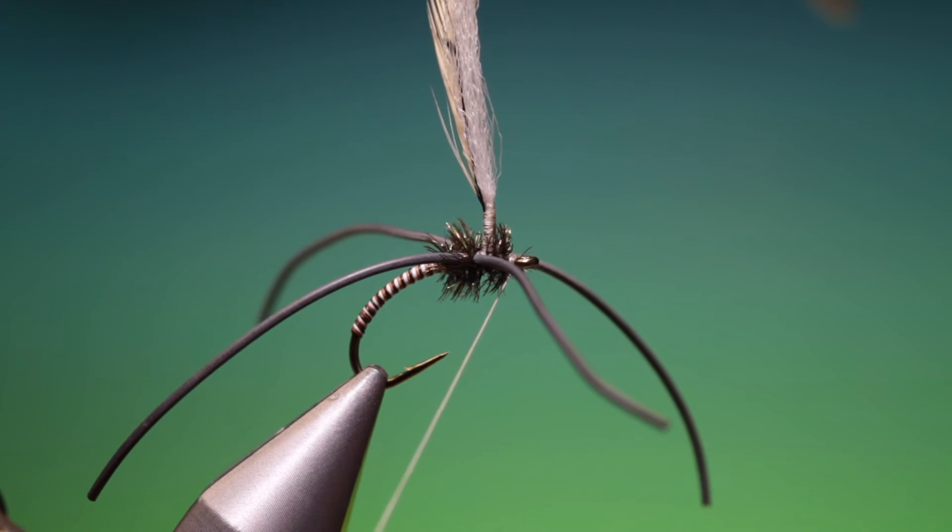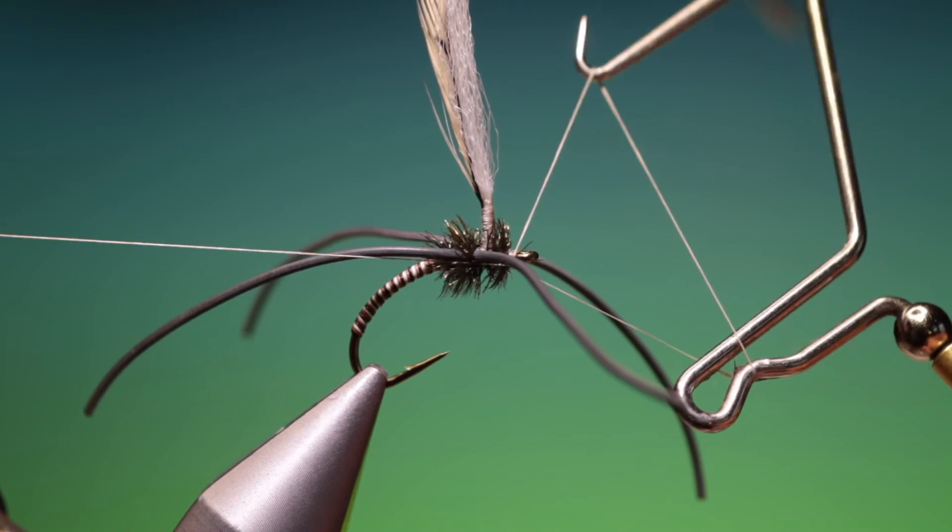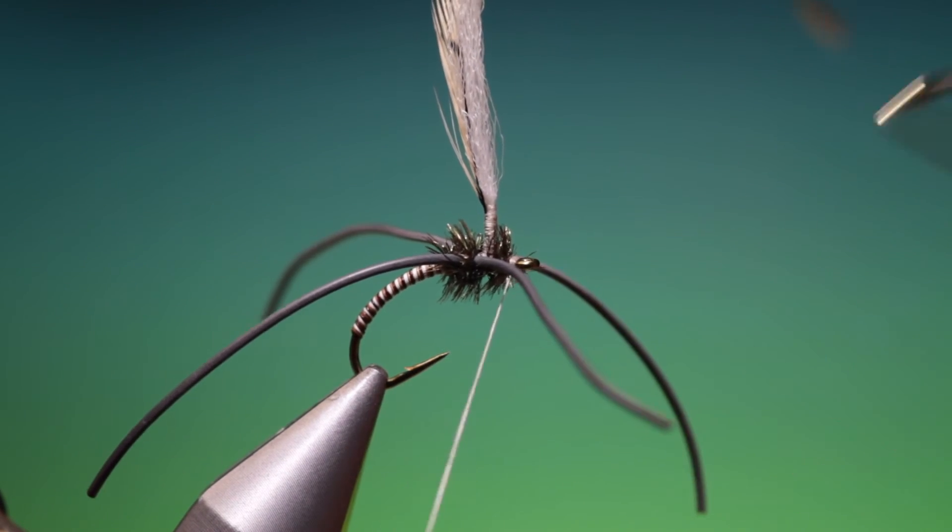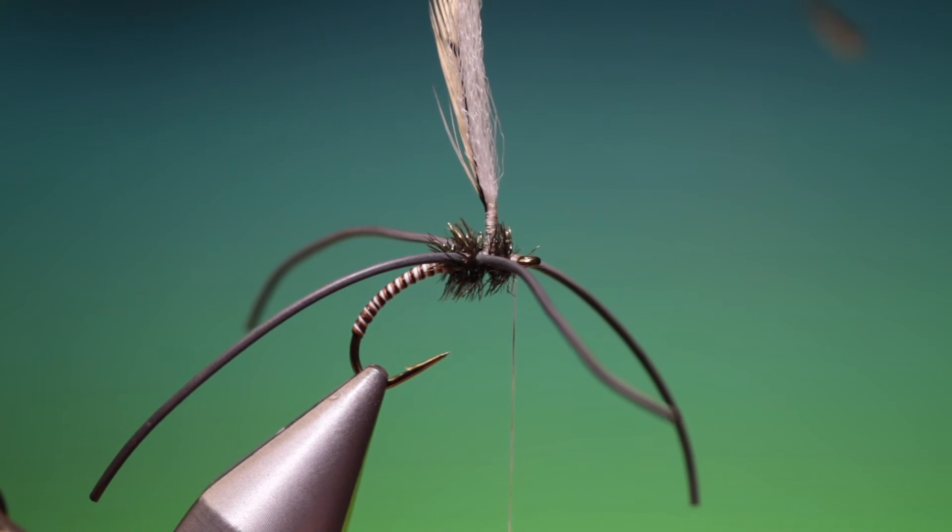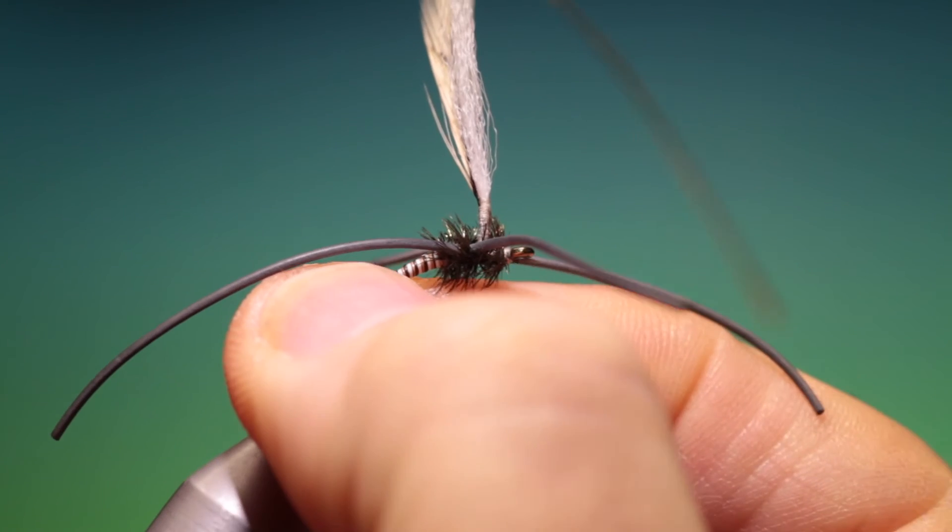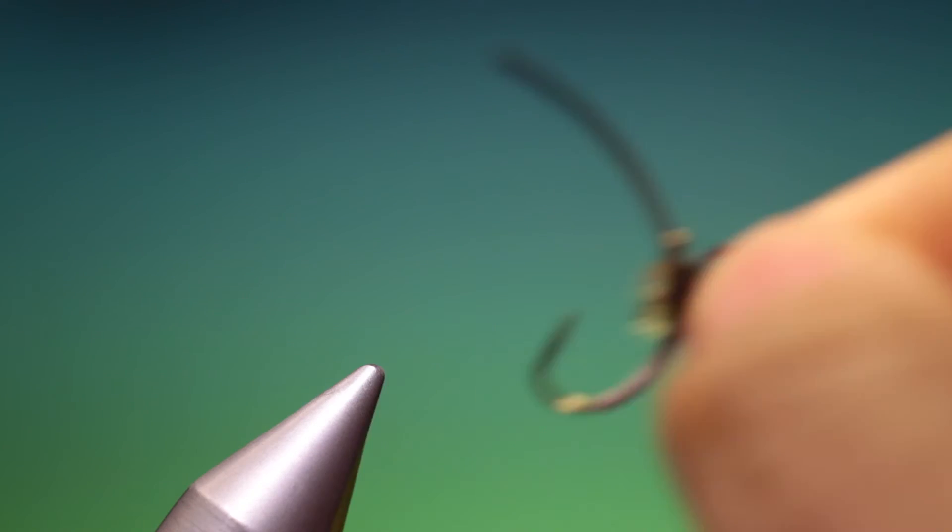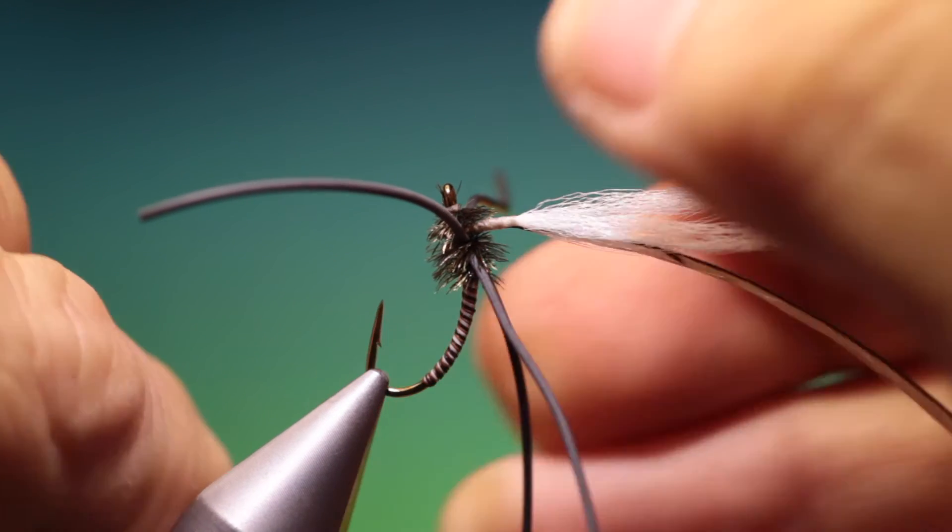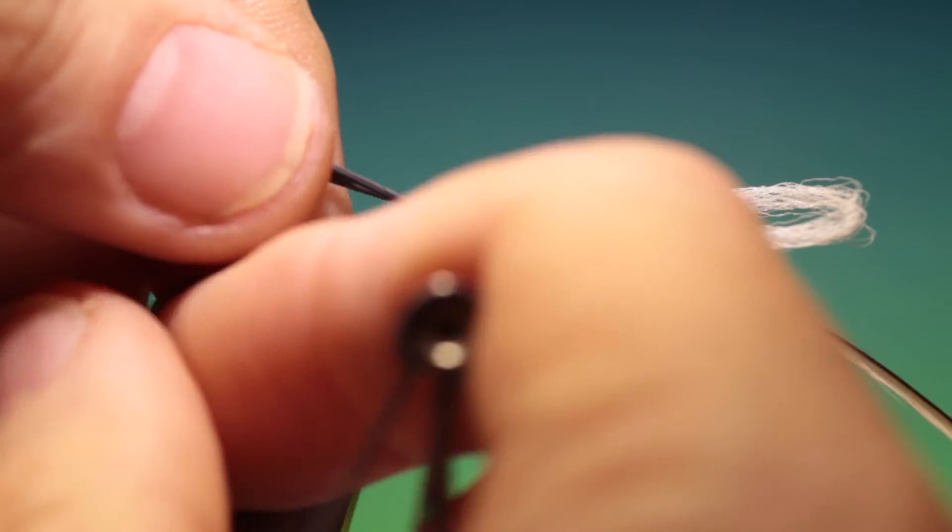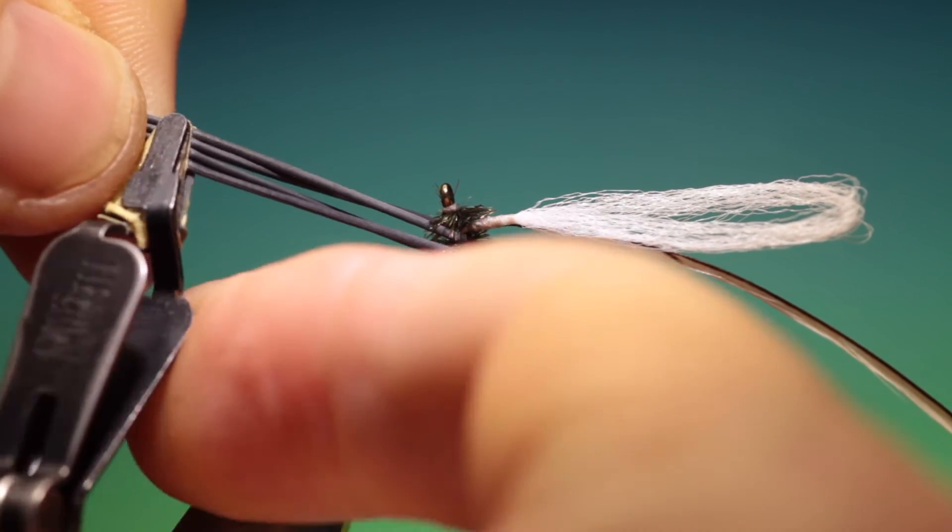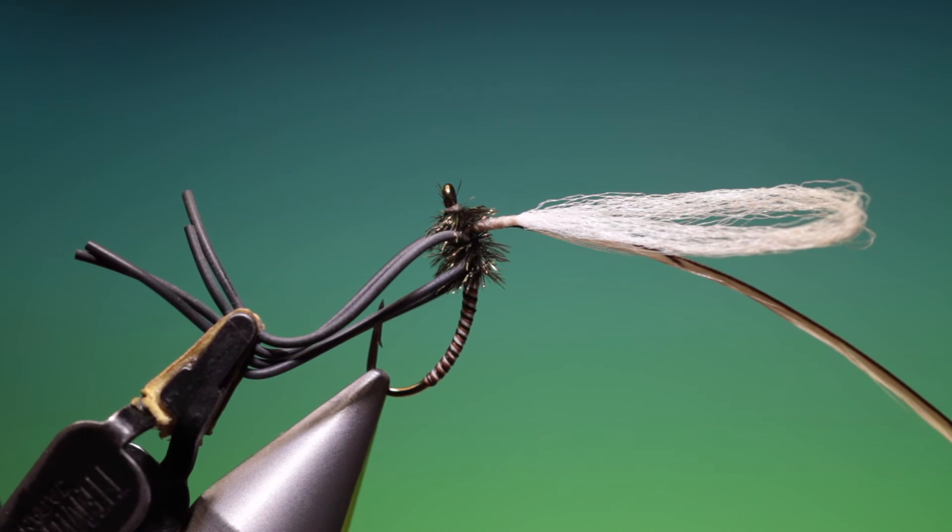Okay I'll just give that a whip finish. Tighten that up. Remove our tying thread. Then we'll remove that. Spin it around. Like so. And I'll take my legs. Bunch them together. And then I just, excuse me, put a hackle plier on them just to keep them out of the way.